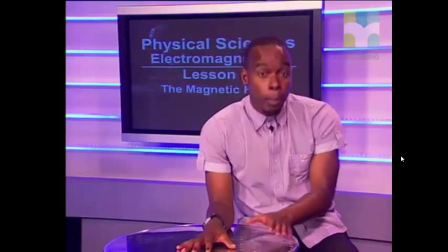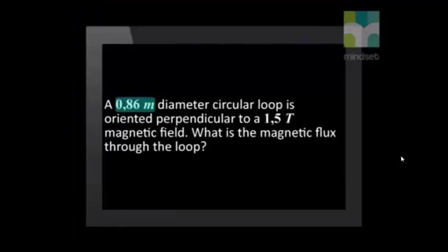Let's do an example where we can apply this new equation. Please do this with me and use a calculator so that you can see how to find the answer. A 0.86 meter diameter circular loop is oriented perpendicular to a 1.5 Tesla magnetic field. What is the magnetic flux through the loop? It helps to draw a picture of the situation. The next step is to write down the equation and then to substitute the values and calculate the answer.